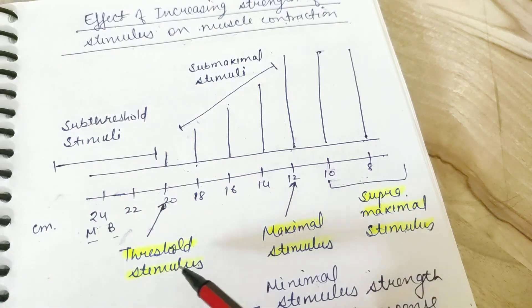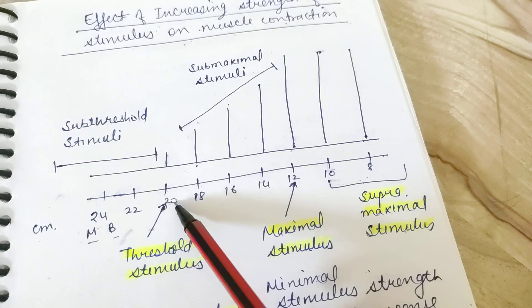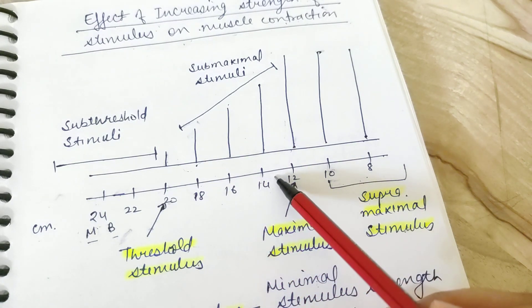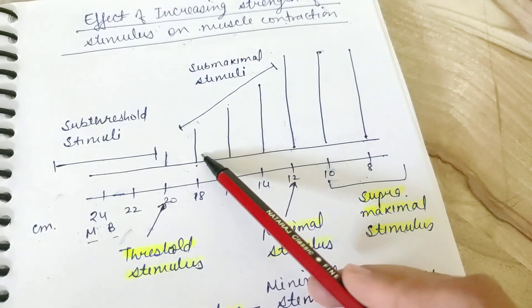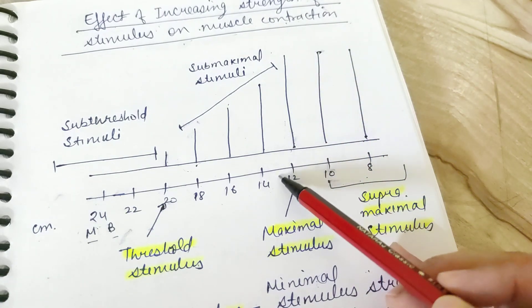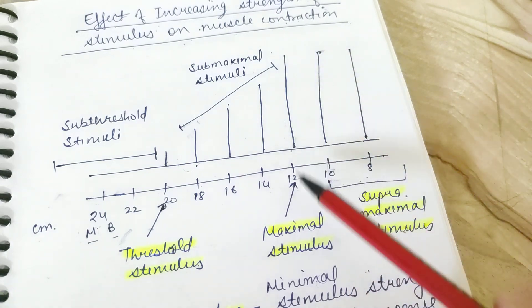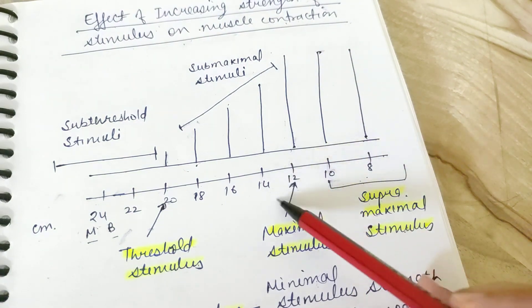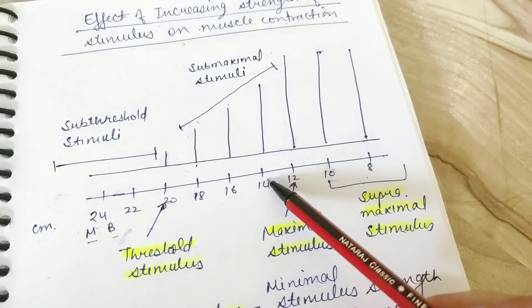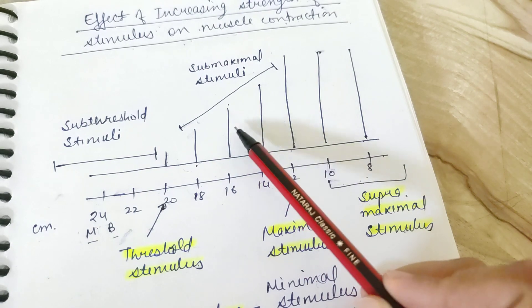You can be asked: what is threshold stimulus? It is the minimum strength of current which can elicit a response. As you can see, if we increase the strength or reduce the distance between the two coils, the height increases up to a point. The stimulus strength where we get the maximal response is called the maximal stimulus.